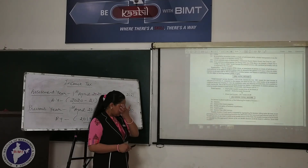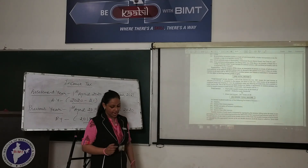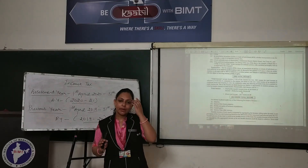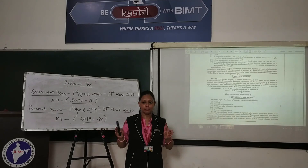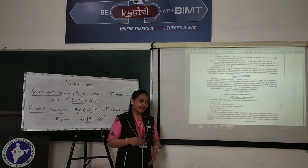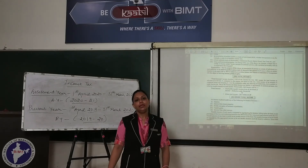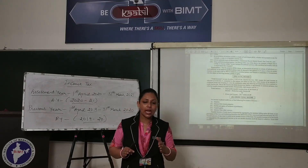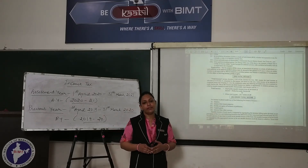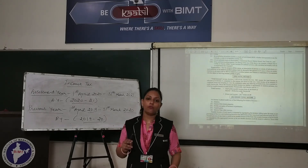The net taxable income of all the heads is aggregated and that total amount is called GTI — Gross Total Income. We calculate the net taxable part of each head separately, then total all the heads' taxable parts together, and we arrive at Gross Total Income.